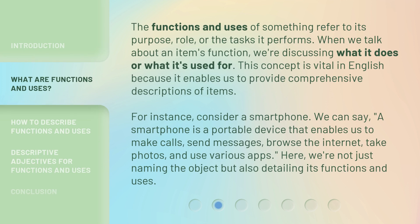The functions and uses of something refer to its purpose, role, or the tasks it performs. When we talk about an item's function, we're discussing what it does or what it's used for. This concept is vital in English because it enables us to provide comprehensive descriptions of items. For instance, consider a smartphone. We can say: a smartphone is a portable device that enables us to make calls, send messages, browse the internet, take photos, and use various apps. Here, we're not just naming the object, but also detailing its functions and uses.